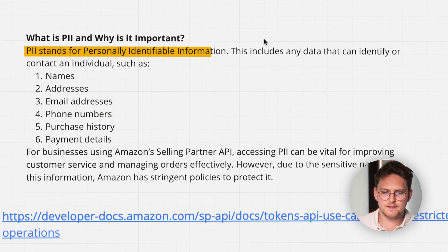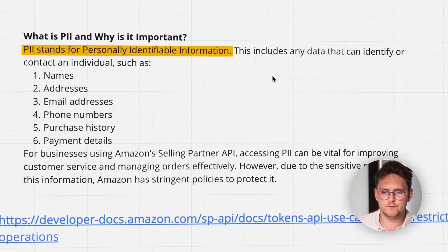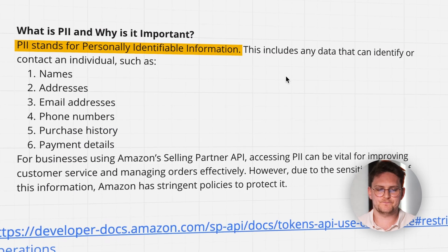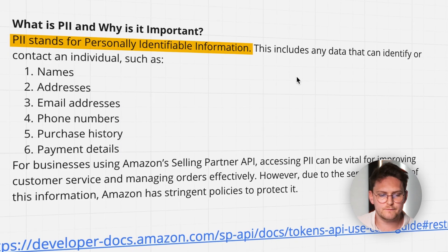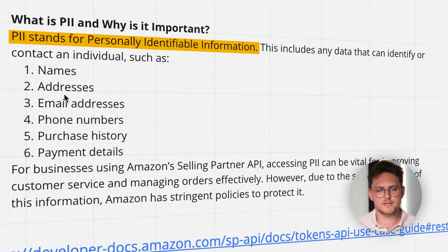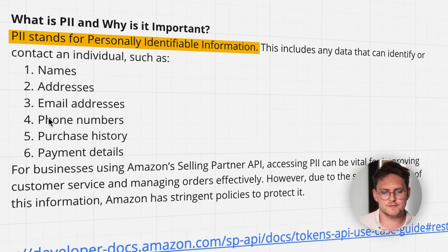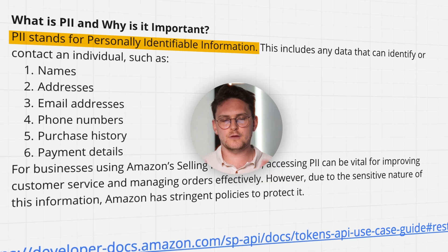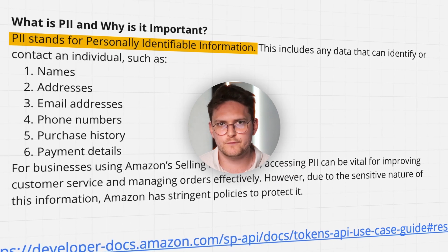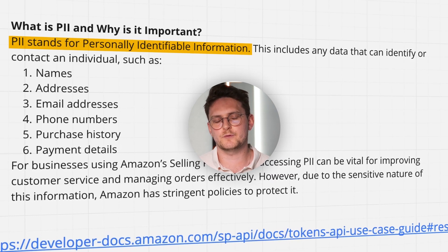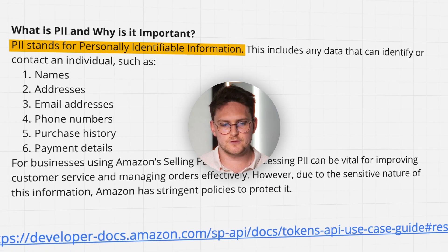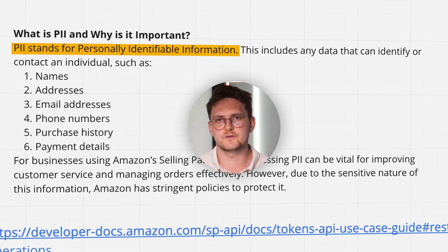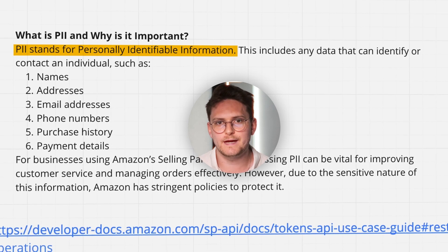PII stands for Personally Identifiable Information, and pretty much this includes any data that can identify and contact individuals, such as name, addresses, email addresses, phone numbers, purchase history, and payment details. So all of the personal information that you can pretty much get from Amazon - and obviously Amazon is hiding this by default.